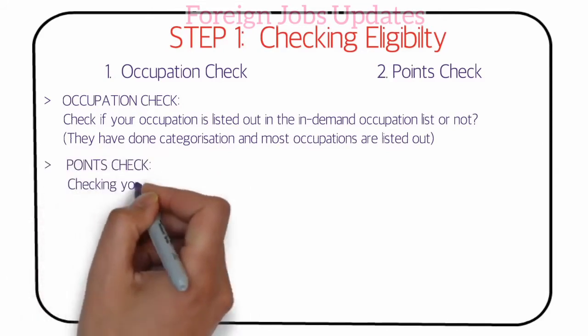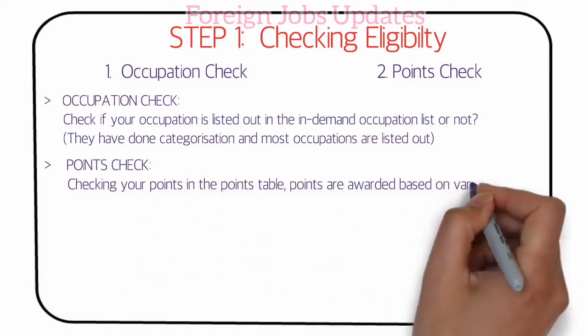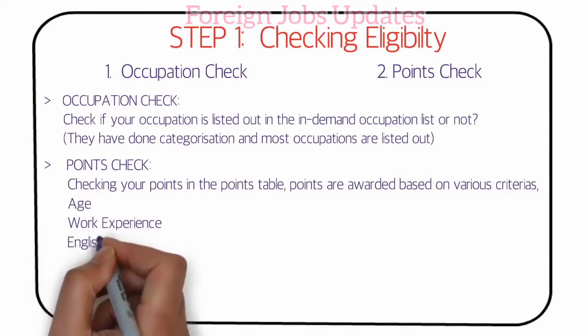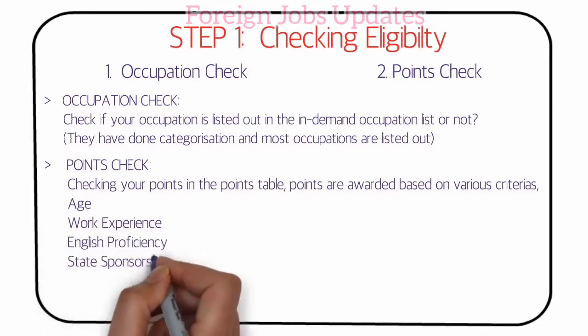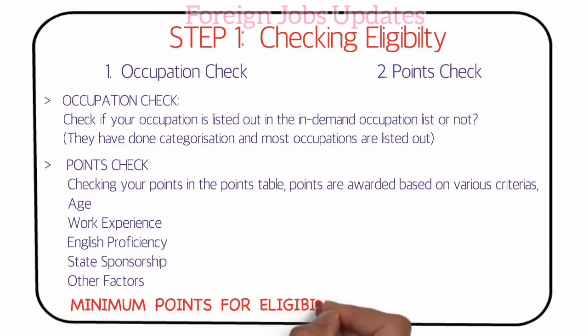In the government portal, you can check the categories and the jobs available. For the points check, you can find points allocated for factors such as work experience, English proficiency, and state sponsorship.